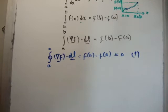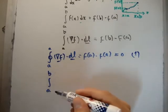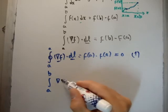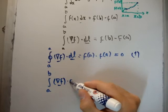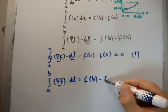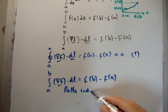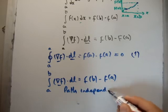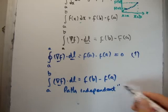And secondly, let's take the integral from a to b of the gradient again, dot dl. Because it's equal to f at b minus f at a, it is path independent.